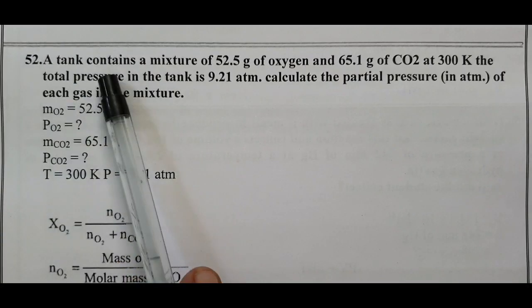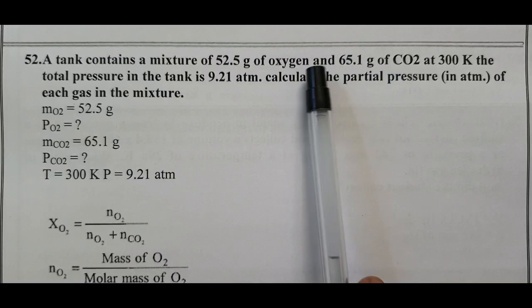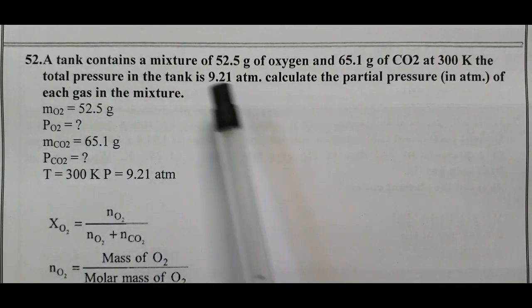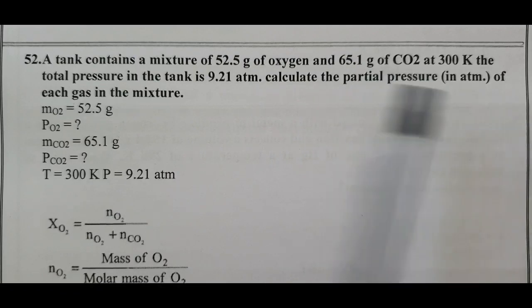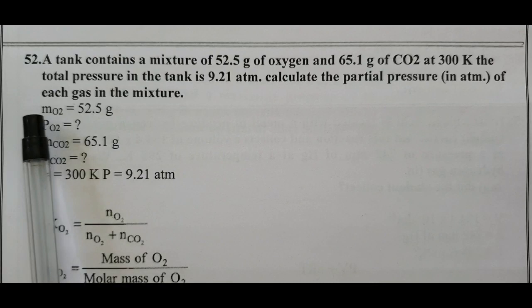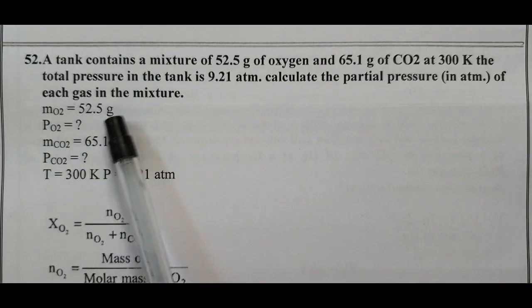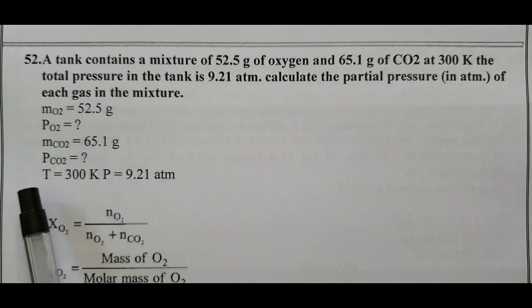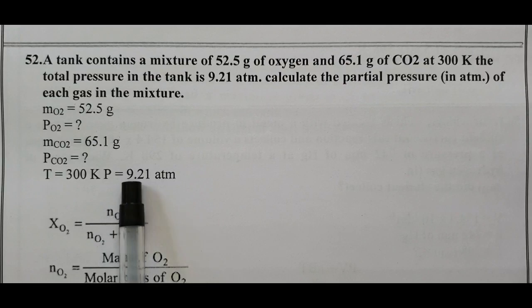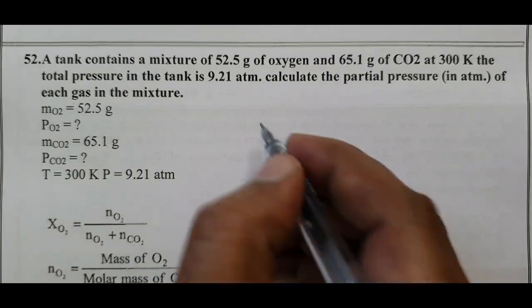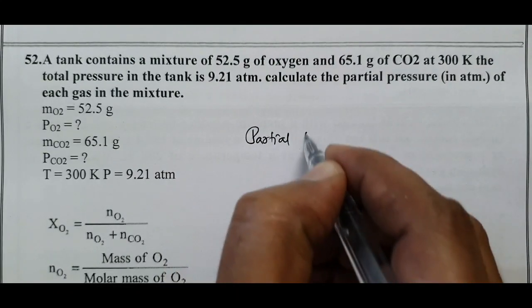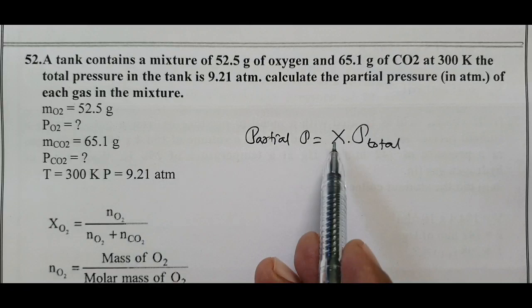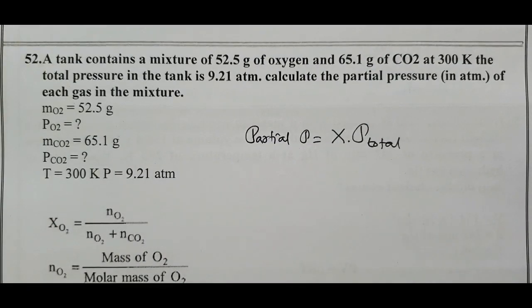Question Number 52: A tank contains a mixture of 52.5 gram of oxygen and 65.1 gram of carbon dioxide at 300 Kelvin. The total pressure in the tank is 9.21 atm. Calculate the partial pressure of each gas in the mixture. Partial pressure equals mole fraction into total pressure. Mole fraction formula is number of moles divided by total number of moles.